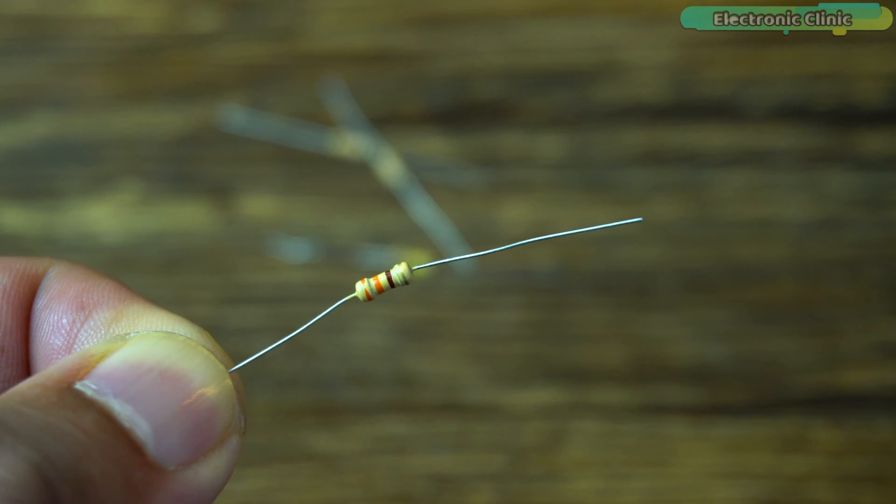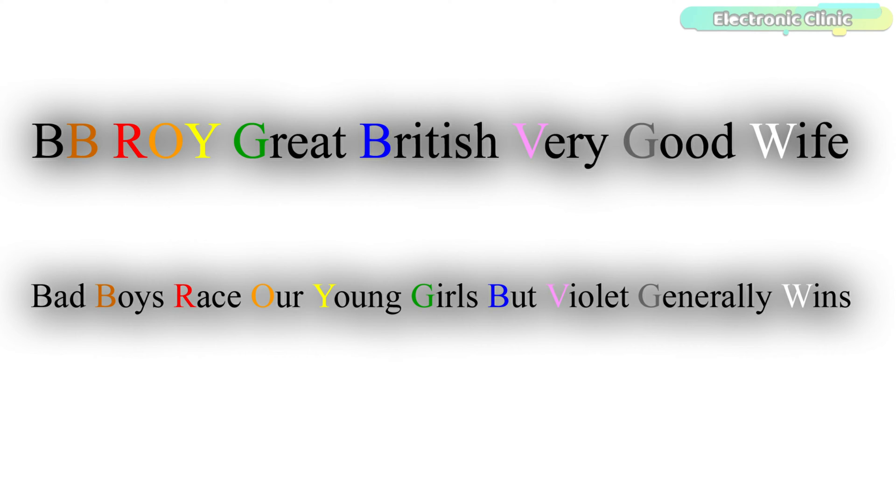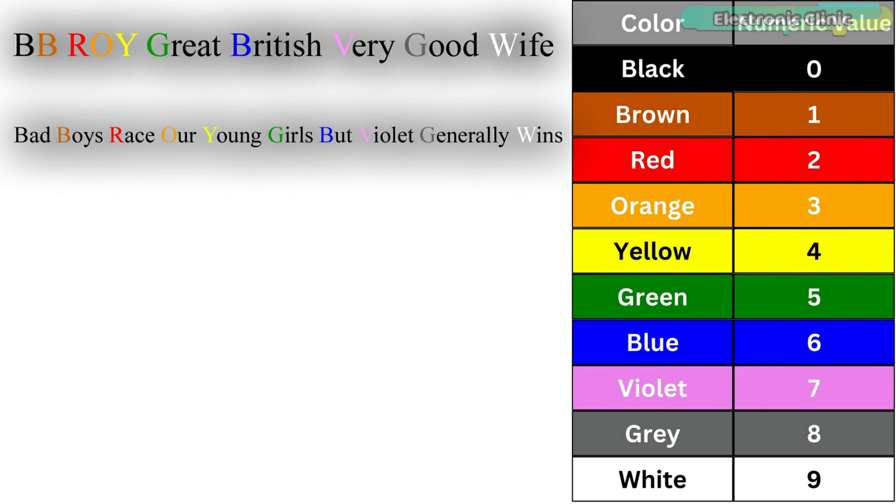And you can have this superpower only by remembering this sentence: B.B.Roy Great British Very Good Wife, or you can remember this other sentence: Be It Boys Race Our Young Girls But Violet Generally Wins. If you remember any of these sentences you can always create a resistor color chart and read any resistor.